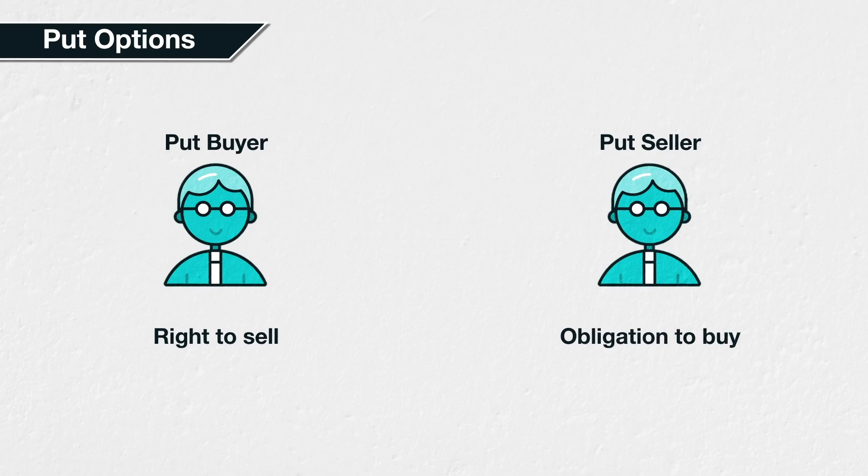In section 5, we will stick to put options in traditional markets, using examples where everything is denominated in US dollars. Then in section 6, we will move on to cryptocurrency put options. This will allow you to first learn the basic mechanics of put options, without the added complexity of cryptocurrencies and inverse contracts. The differences are particularly important when calculating profit or loss and breakeven points. So let's begin in the next lecture with a simple example of how a company might use a put option.